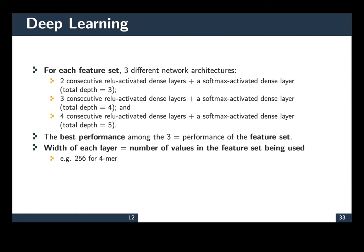For the deep learning, we use three architectures. They consist of two, three, or four ReLU-activated dense layers ended with a soft max dense layer. When we're reporting the performance of our method, we're reporting the performance of the best architecture for a given feature set. The width of the input layer is proportional to the size of the feature set. So when running an experiment with K-mer, the size is 256.